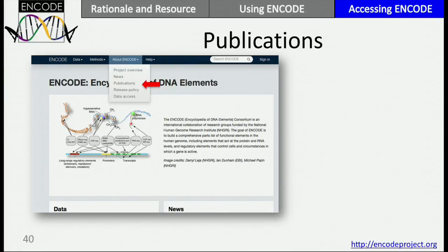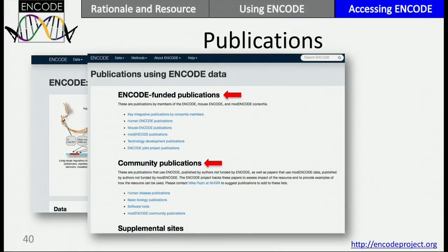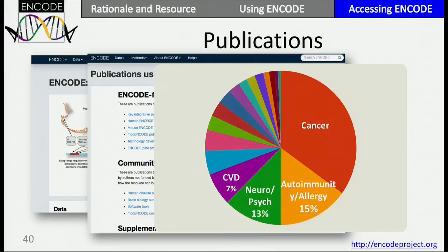We also have publications on the ENCODE portal. A lot of times people ask how they can use ENCODE in their research, and many of these illustrations come from seeing how the community uses ENCODE. On the portal are ENCODE-funded publications and community publications from people outside of ENCODE using the data, broken into categories like basic biology research and human disease studies. By our count, the most common application of ENCODE right now is cancer, followed by diseases whose etiology is autoimmunity, inflammatory, or allergic, then neurodegeneration and psychiatric disorders, cardiovascular disease, and metabolic disease.